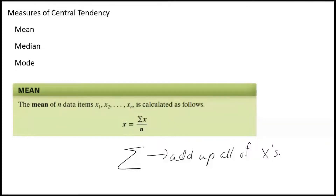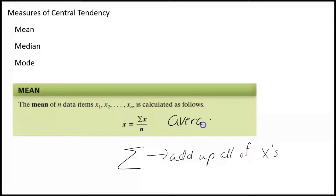You've done this before — this is just average. When you average your test grades, that's exactly what this is. So when you see the mean, I want you to think of it as historically just the average, like when you add up all of your test grades and divide by the number of tests.